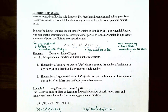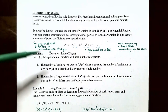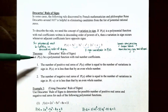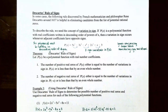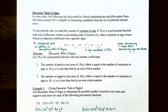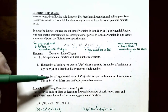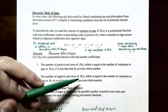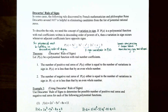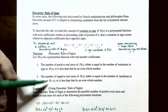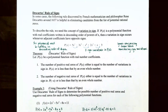So how do we use variations in sign to find information about the real zeros? Descartes' Rule of Signs states: Let P of x be a polynomial with real number coefficients. Number one, the number of positive real zeros of P of x either equals the number of sign variations of P of x, or is less than that by an even whole number. Number two, the number of negative real zeros either equals the number of sign variations of P of negative x, or is less than that by an even whole number.